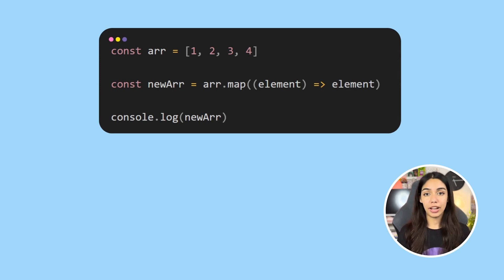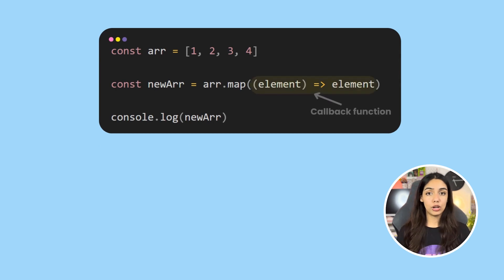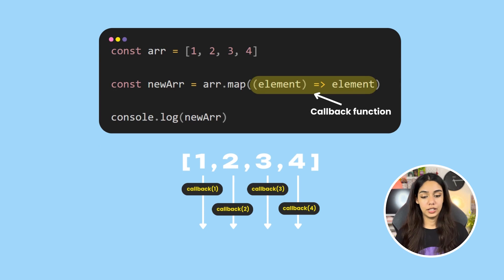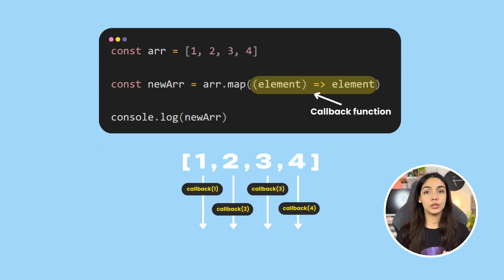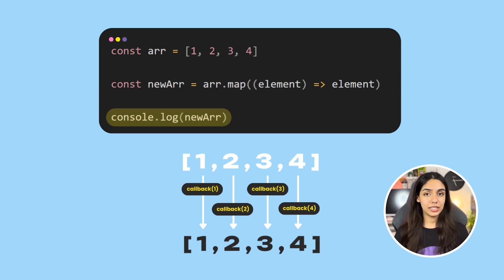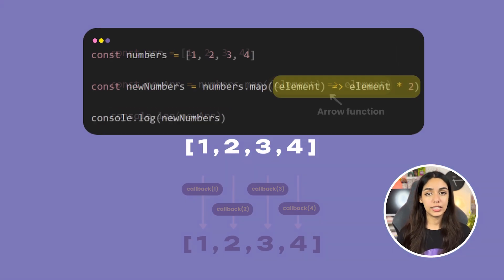At the end of the map function, this new array is returned. The simplest example is where the array is mapped to the same values as the original array. In this case the callback accepts a value and returns the same value, so the returned array looks identical to the original — but this is not very useful.